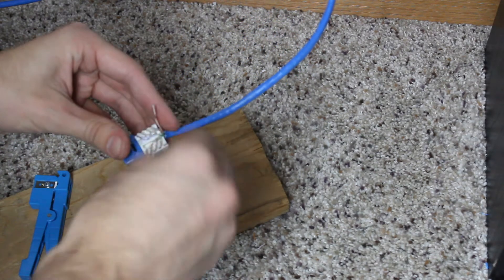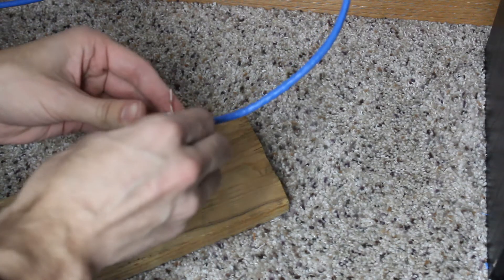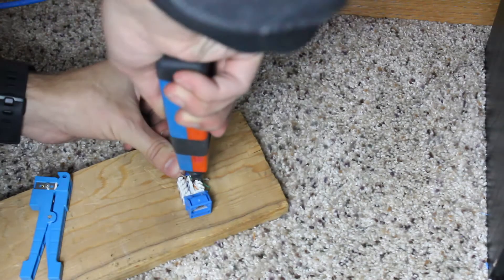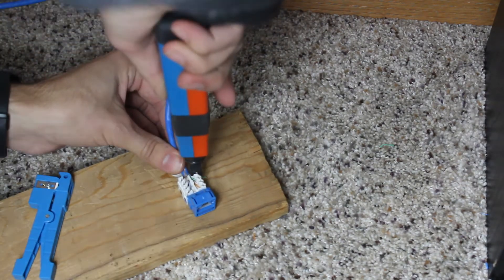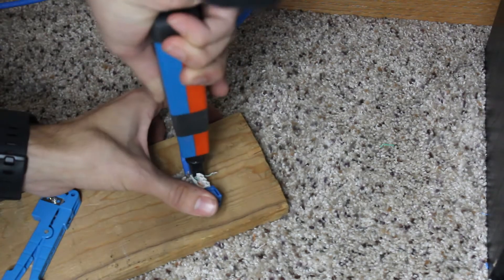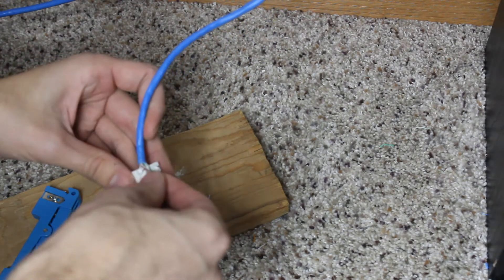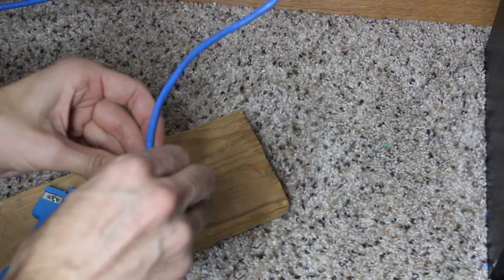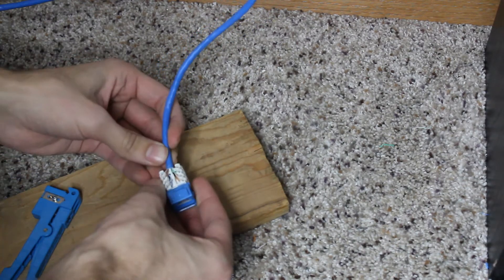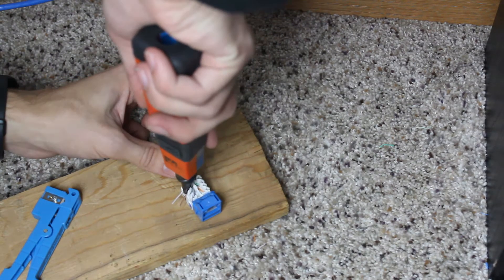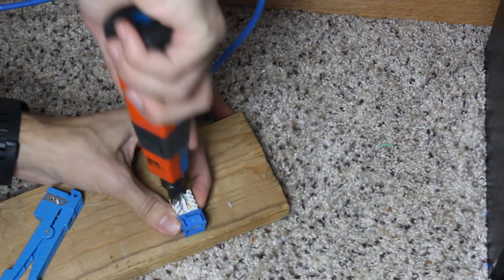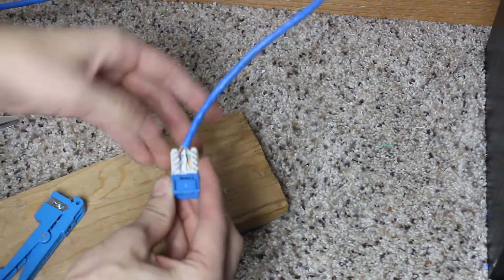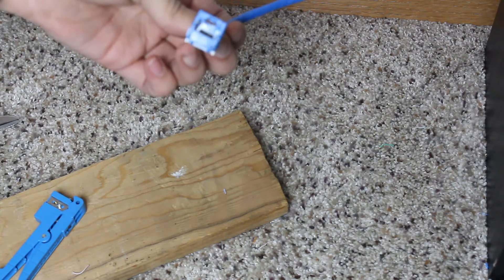Down and again. And here is the brown. The brown goes into this one and the white and brown goes into that one. Take the tool again to the outside. Down and again. The next one over. Down and again. And there we go. We can put the cover on now and put it into the outlet as soon as we finish the other one.